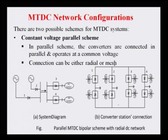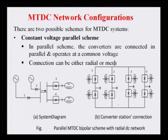Broadly, multi-terminal DC networks can be classified into two categories: the constant voltage or parallel scheme, and the constant current or series scheme. A third category — the hybrid scheme — is also possible by combining parallel and series connections together.